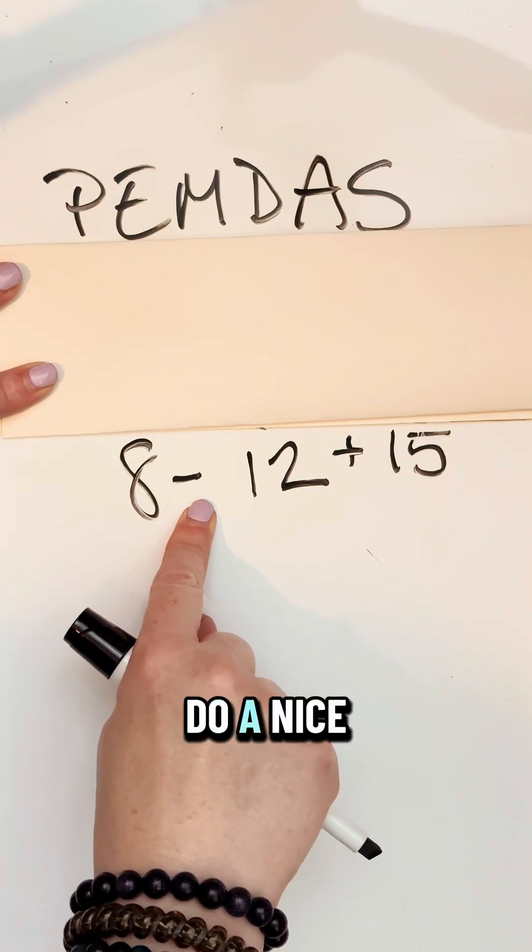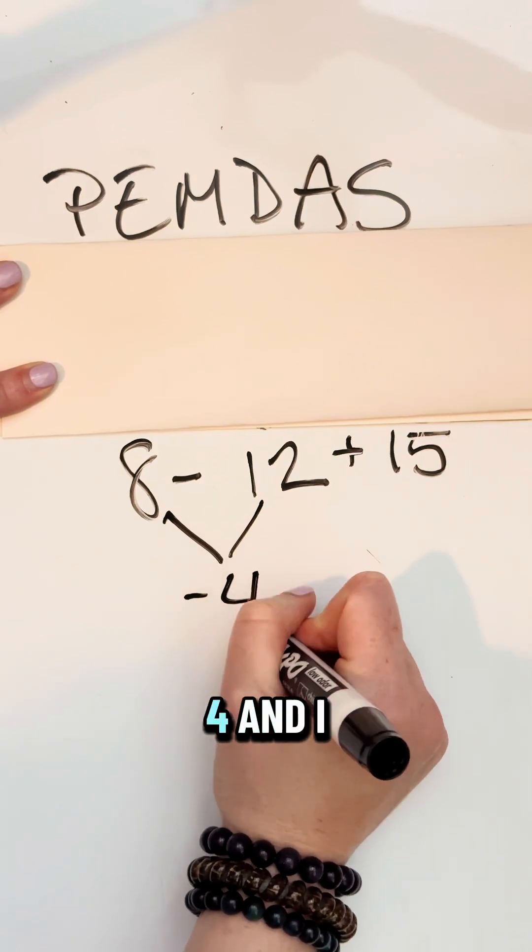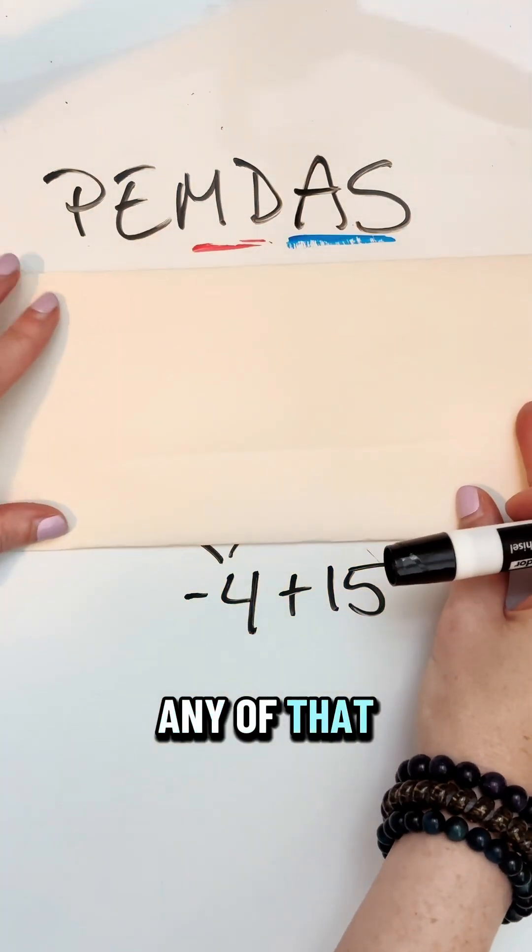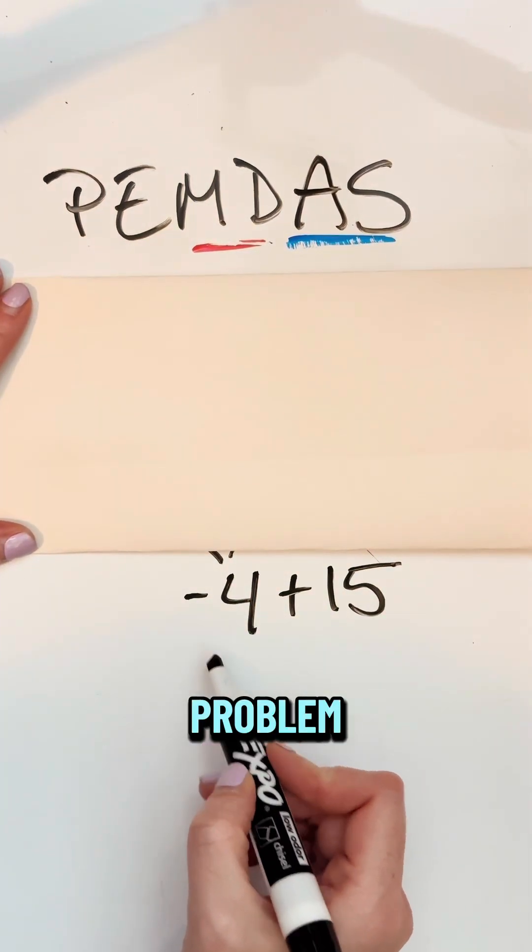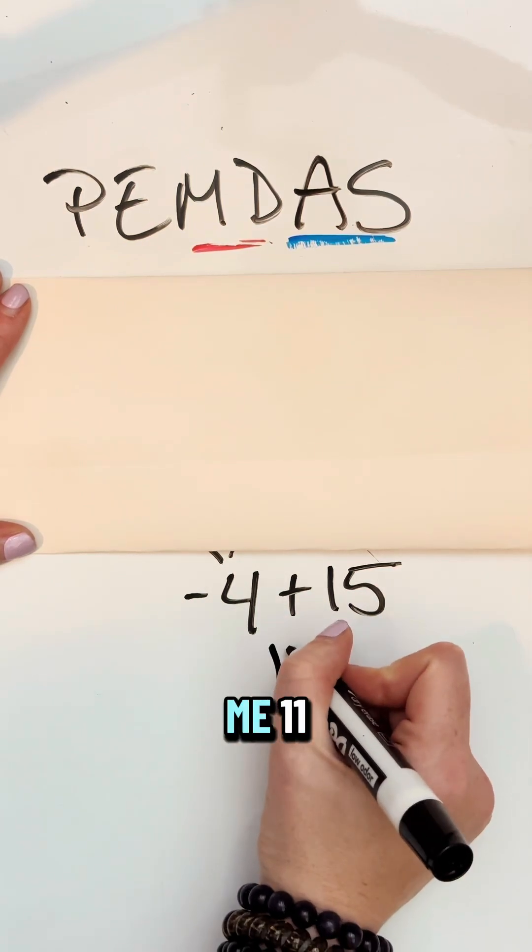Boom. Doing my subtraction first. Again, if you dig the arrows, totally fine. 8 minus 12 is a negative 4, and I bring down my plus 15. I don't need to look at any of that. I am just down to this little bitty baby problem. Negative 4 plus 15. The only thing I have left to do is add. Negative 4 plus 15 is going to give me 11.